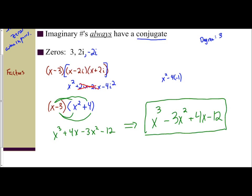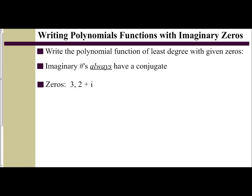Let's try another example. We're given the zeros 3 and 2 plus i. I see I have an imaginary zero, so I need to write down its conjugate, which is also a zero. The conjugate of 2 plus i is 2 minus i.